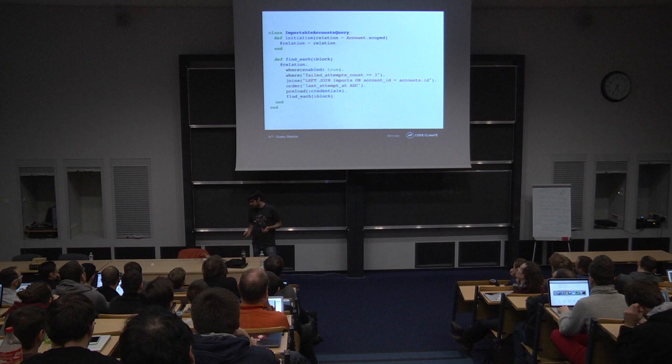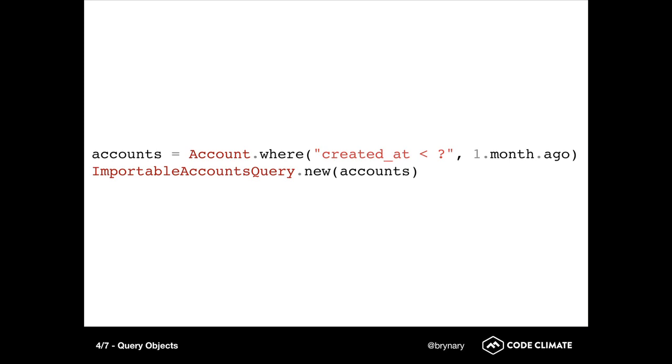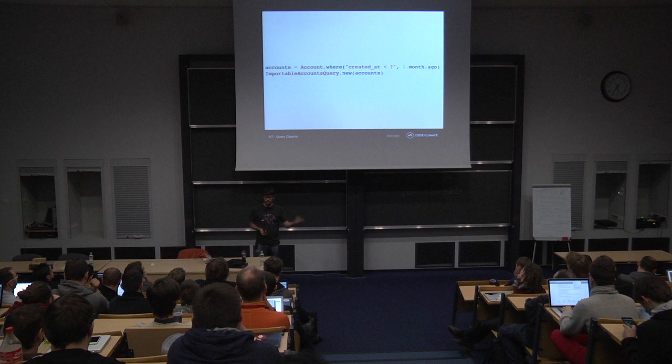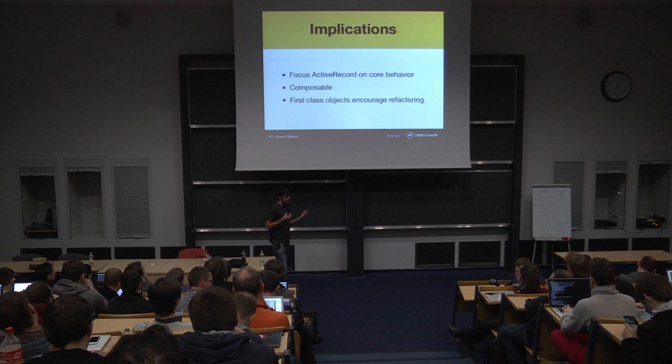So there's a solution in extracting query objects. You can just have an object which represents accounts which are able to be imported and pull out the logic that was previously in the class method. If you have a job that needs to iterate through importable accounts, you can just instantiate the query object and call find_each on it. It will iterate through the block, paging through the accounts. And these are also composable. Just like ActiveRecord relations. You can compose a relation that says I want accounts that are older than one month ago. And you can use that in the initializer for the importable accounts query, and it will work as you expect.